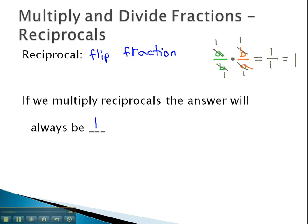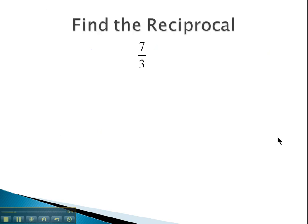Let's take a look at finding some reciprocals of fractions. Here, we have 7 thirds and we want the reciprocal. Reciprocal simply means flipping it over, so now the 3 is in the numerator and the 7 is in the denominator.